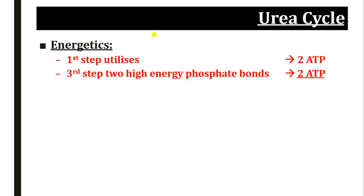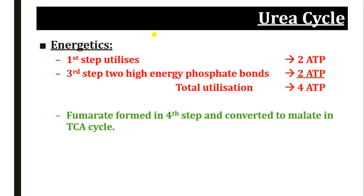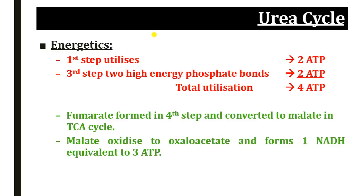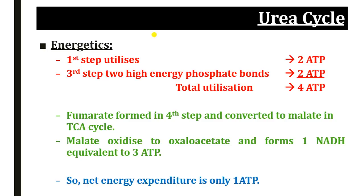Regarding the energetics of the urea cycle: in the first step, carbamoyl phosphate synthetase 1 utilizes two ATP, and in the third step argininosuccinate synthetase utilizes two high-energy phosphate bonds, so a total of four ATP are utilized. The fumarate formed in the fourth step enters the TCA cycle and is converted to malate. Malate is then oxidized to oxaloacetate, forming one NADH equivalent to three ATP. So the total net energy expenditure is only one ATP per urea molecule produced.